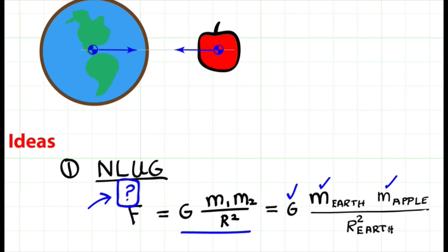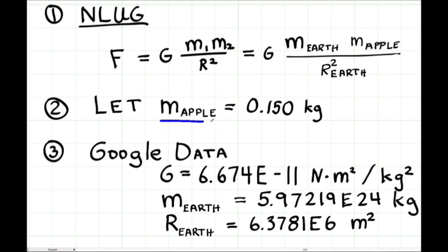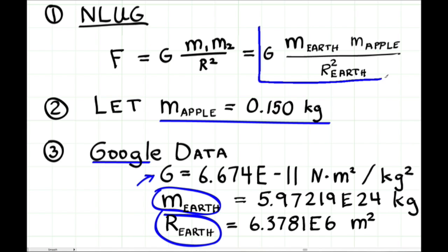Because the distance from the apple to the Earth's surface is going to be very small compared to this number. Assume the mass of the apple is 150 grams. Then use Google to look up data. We can find the value of the gravitational constant, the mass of the Earth is given here, the radius of the Earth is given here, and now we have all the information we need to plug numbers into this equation.